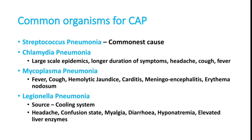The clinical features of atypical pneumonias like Chlamydia, Mycoplasma, and Legionella differ from typical pneumonia. Chlamydia is associated with large-scale epidemics, longer duration of symptoms before onset, headache, cough, and mild fever. Mycoplasma presents with mild fever, cough, and hemolytic anemia with jaundice — a very common finding. Mycoplasma can also cause carditis, meningoencephalitis, and erythema nodosum — all atypical features compared with Streptococcus pneumoniae.